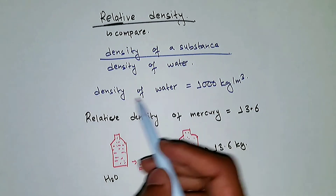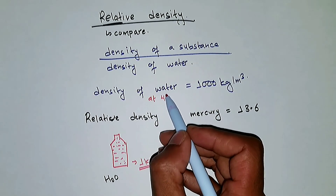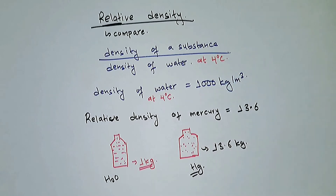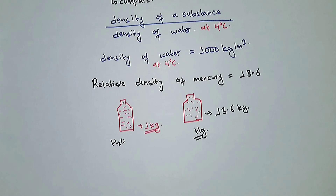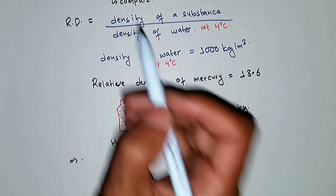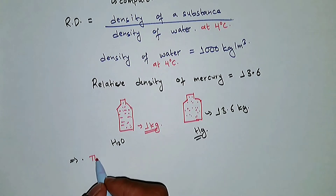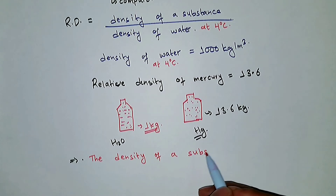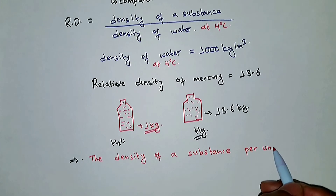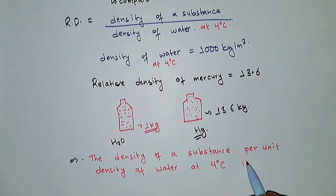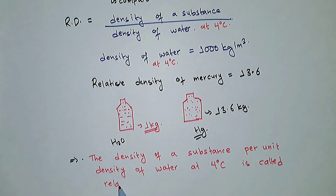I forgot to mention that the density of water is 1,000 kg per cubic meter at 4 degrees Celsius — it's at its maximum at 4 degrees Celsius. Sometimes it's written as the density of water at 4 degrees Celsius, so please don't be confused by that. The formula for relative density is: the density of a substance divided by the density of water at 4 degrees Celsius.